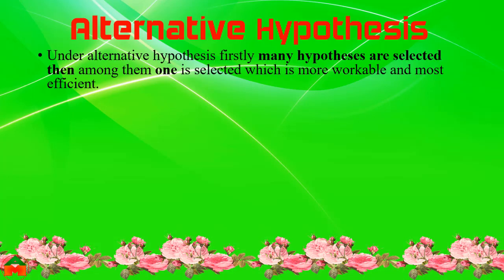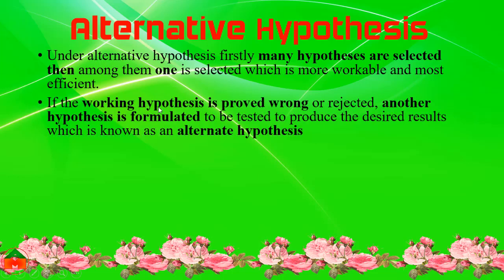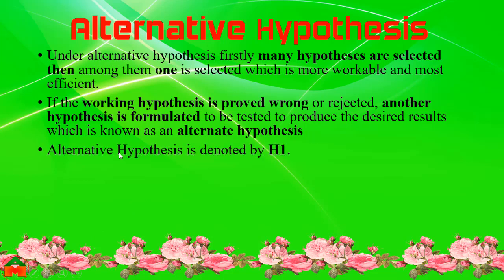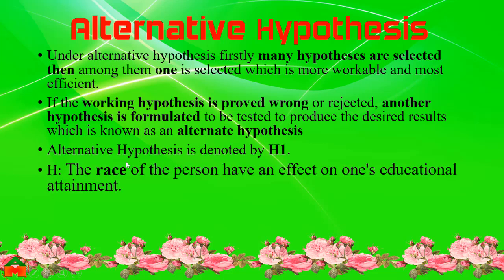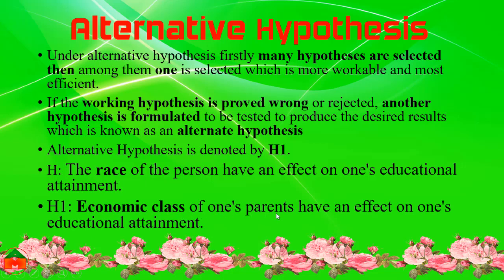Alternative Hypothesis: under alternative hypothesis, many hypotheses are selected, then among them one is selected which is more workable and most efficient. If the working hypothesis is proved wrong or rejected, another hypothesis is formulated to be tested to produce the desired results, which is known as the alternative hypothesis, denoted by H1. Example: if 'the race of a person has an effect on one's educational attainment' is rejected, then we alternatively use 'economic class of one's parents has an effect on one's educational attainment.'